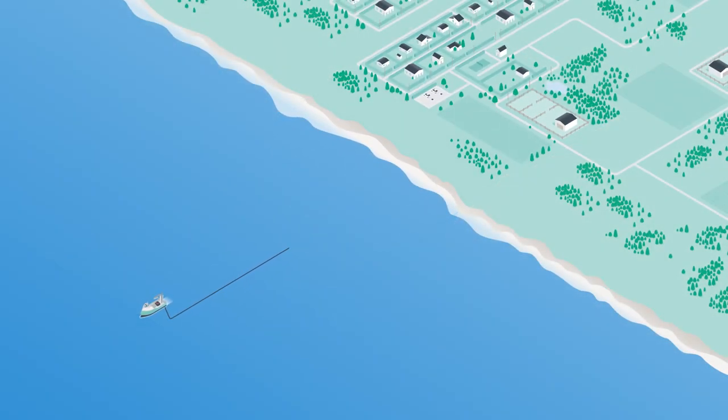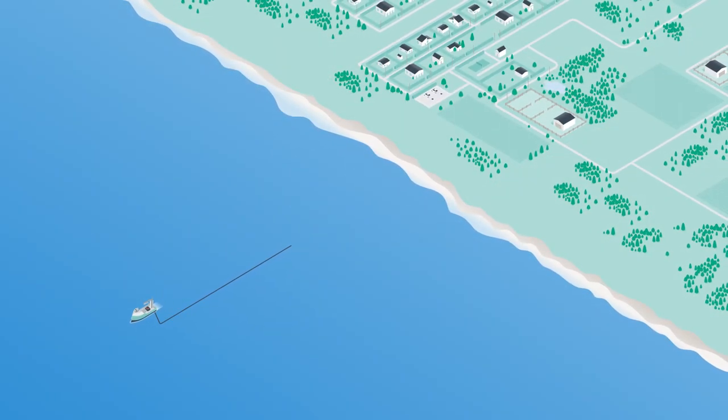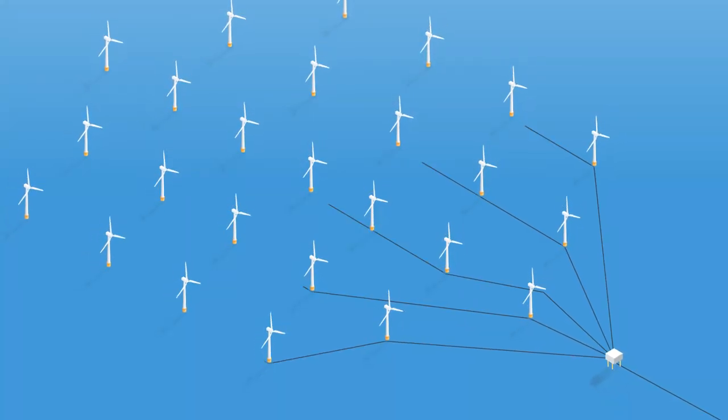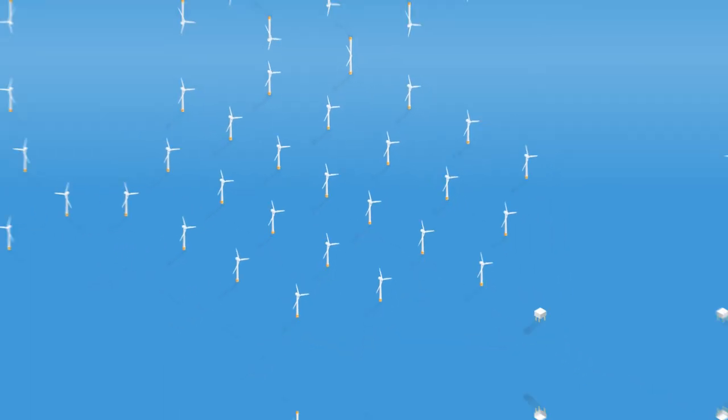The cable lay vessel continues laying cables towards the offshore wind farm, where they are connected to the turbines so they can send their power to shore.